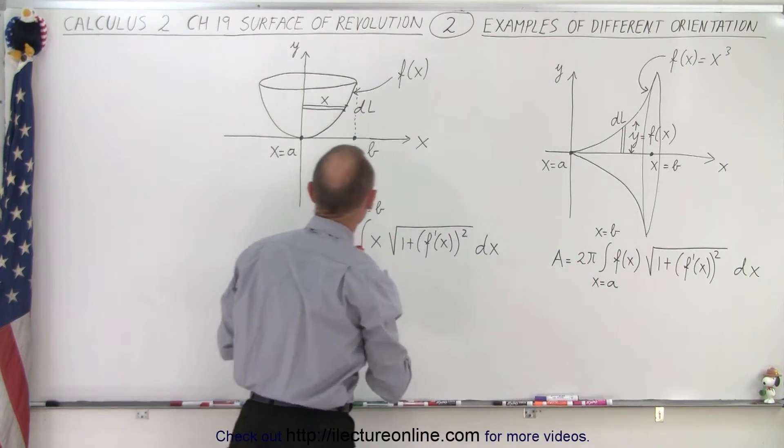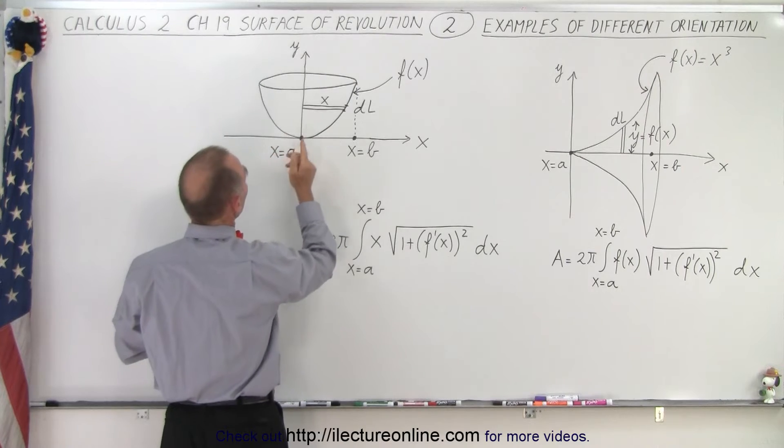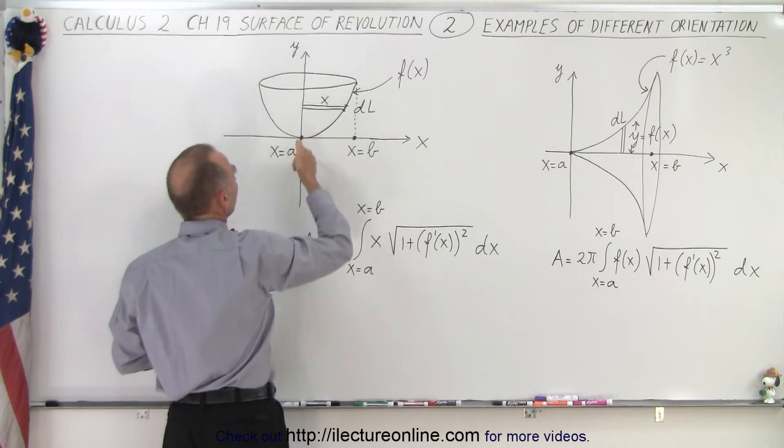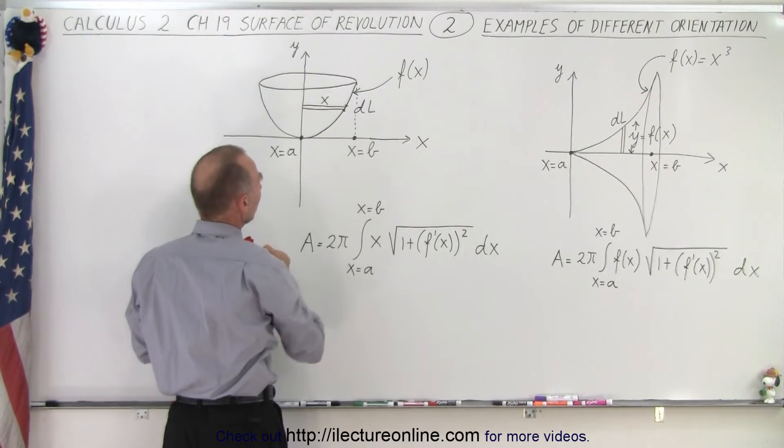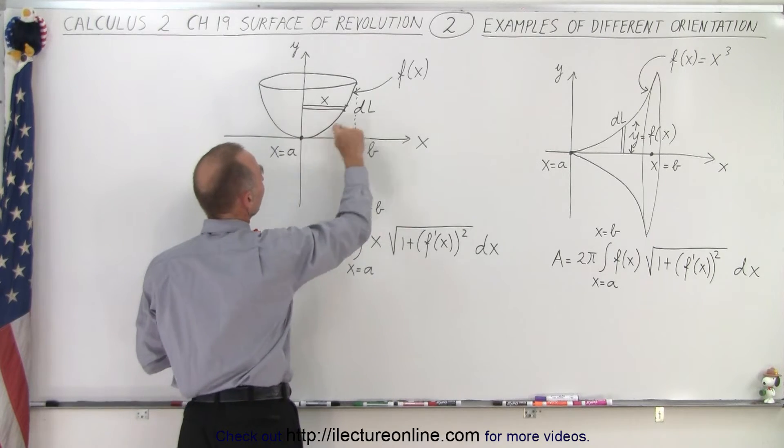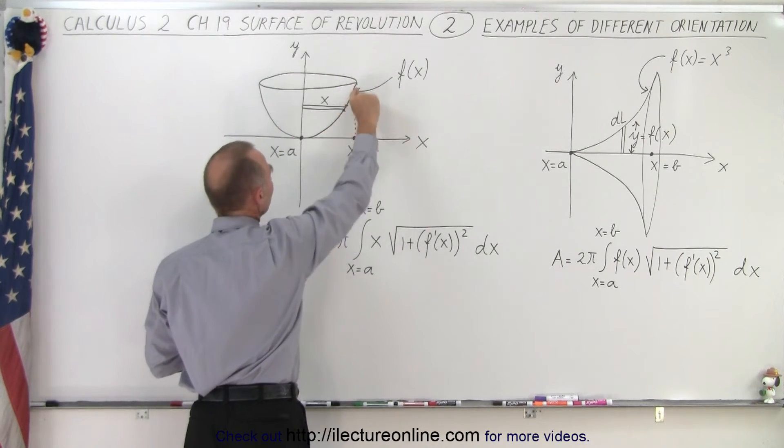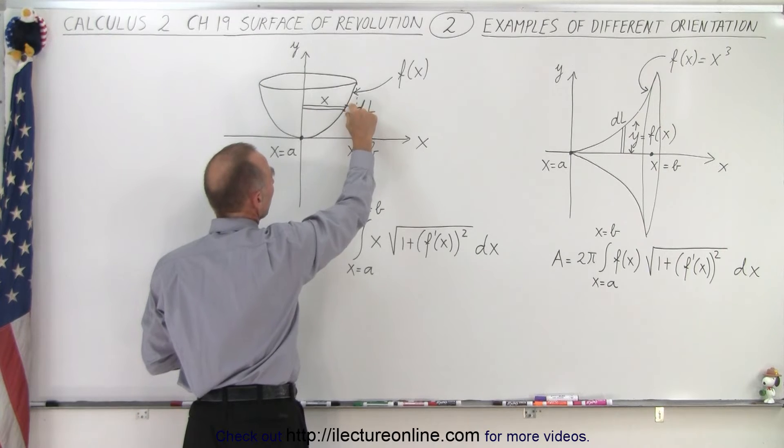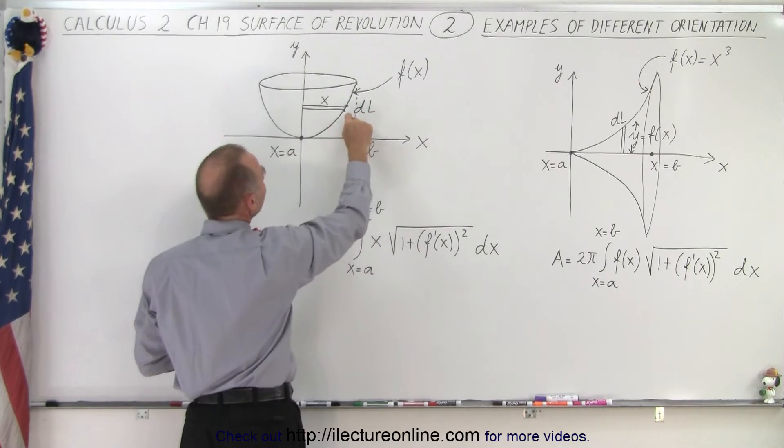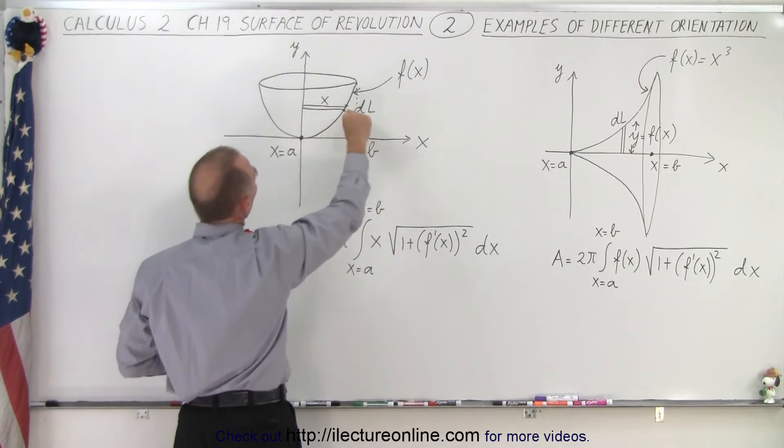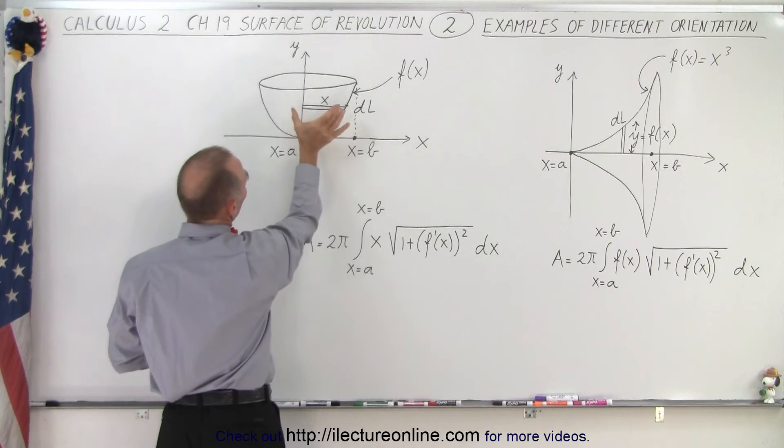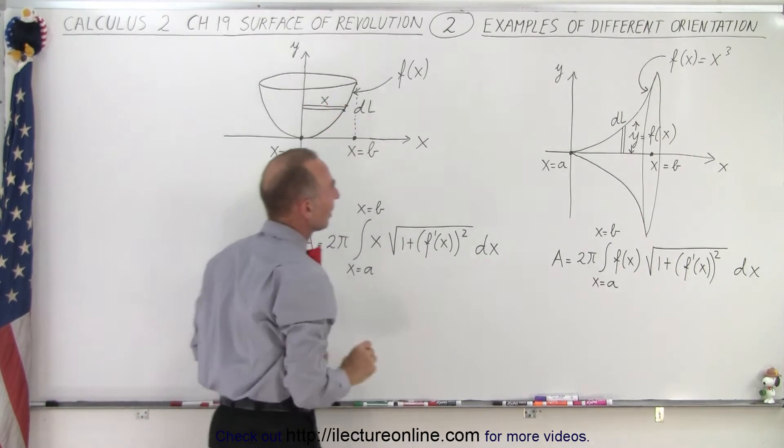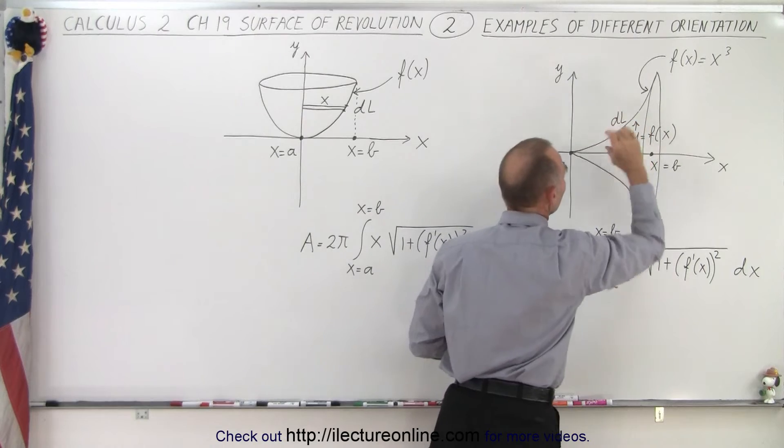What we could also do is we could have something like this when it's situated where now it's symmetric along the y-axis. We use the same principle. We have the function of x here on the edge of that object. We then take a small segment of that that's a small arc length dL, and then we wrap that around the y-axis. But now notice that the radius is going to become x instead of the radius being the function of x.